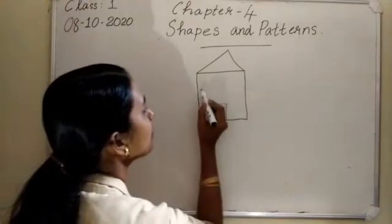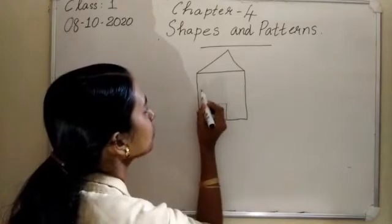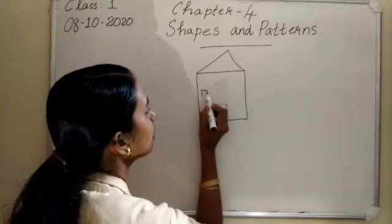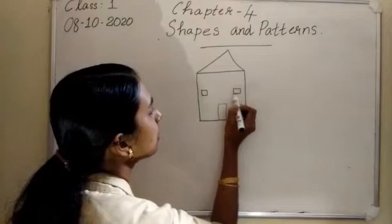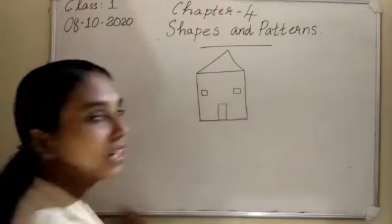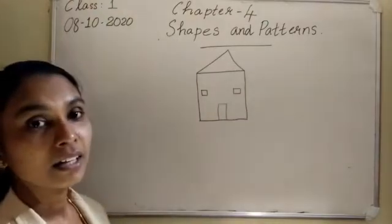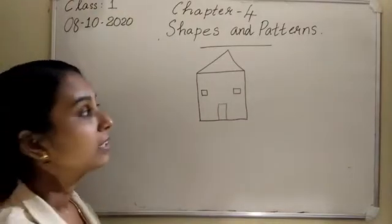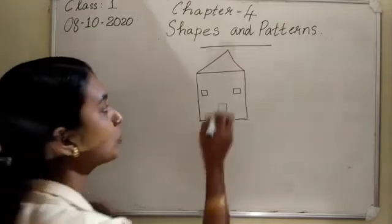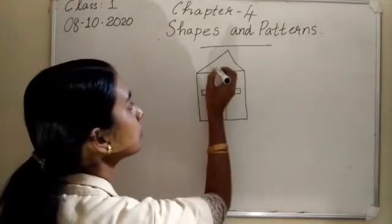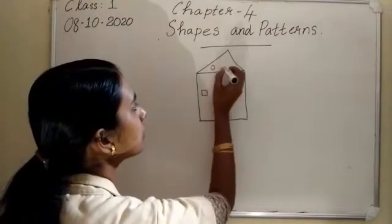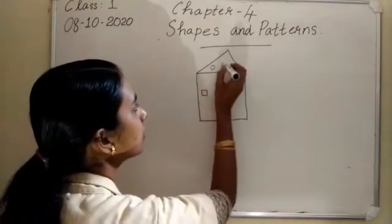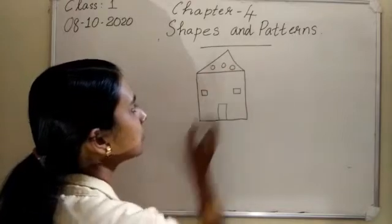You draw a rectangle for the door. Then we can draw some windows here - small square windows. Then we can put some holes like this - these are circles.